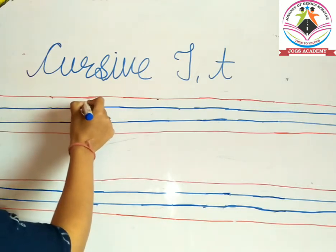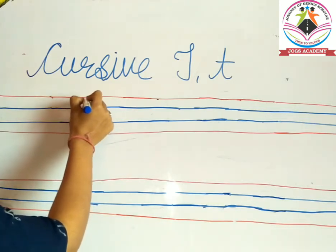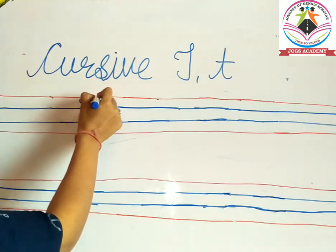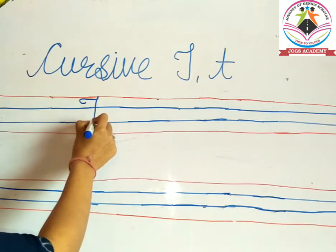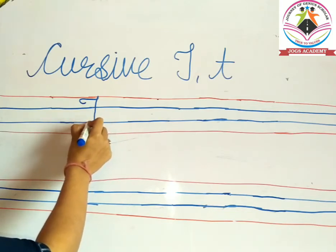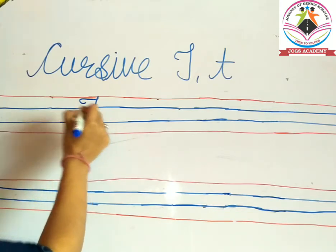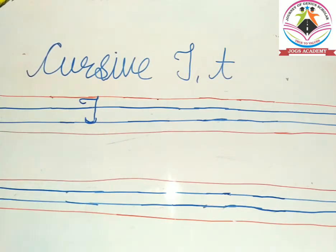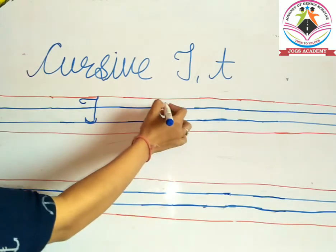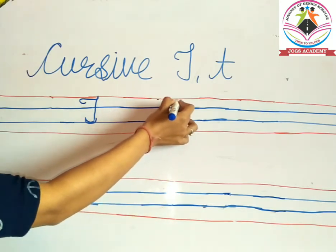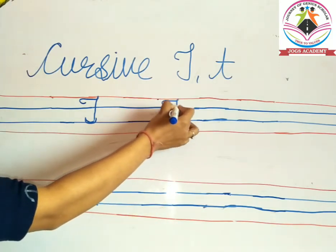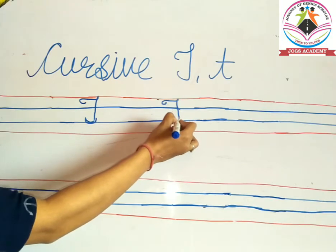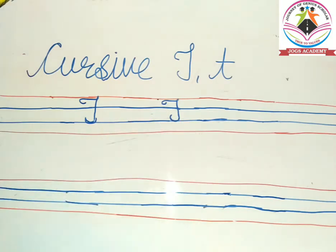So firstly we will draw a sleeping line like this and a standing line like this and make a curve. This is capital T. Again, sleeping line, standing line and make a curve. This is capital T.